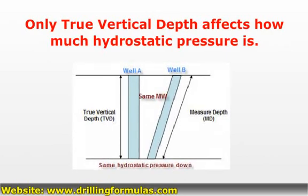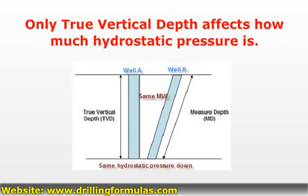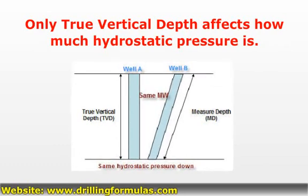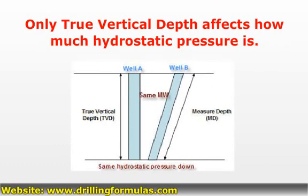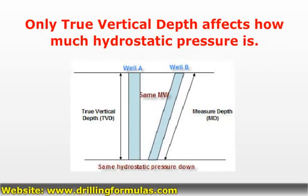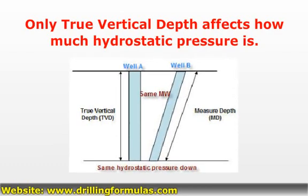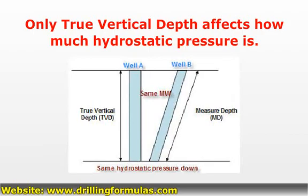For example, as you see in this schematic, Well A and Well B have the same vertical depth. With the same mud density and wellbore, the bottom-hole pressure due to hydrostatic pressure is the same. The only difference between Well A and Well B is mud volume.